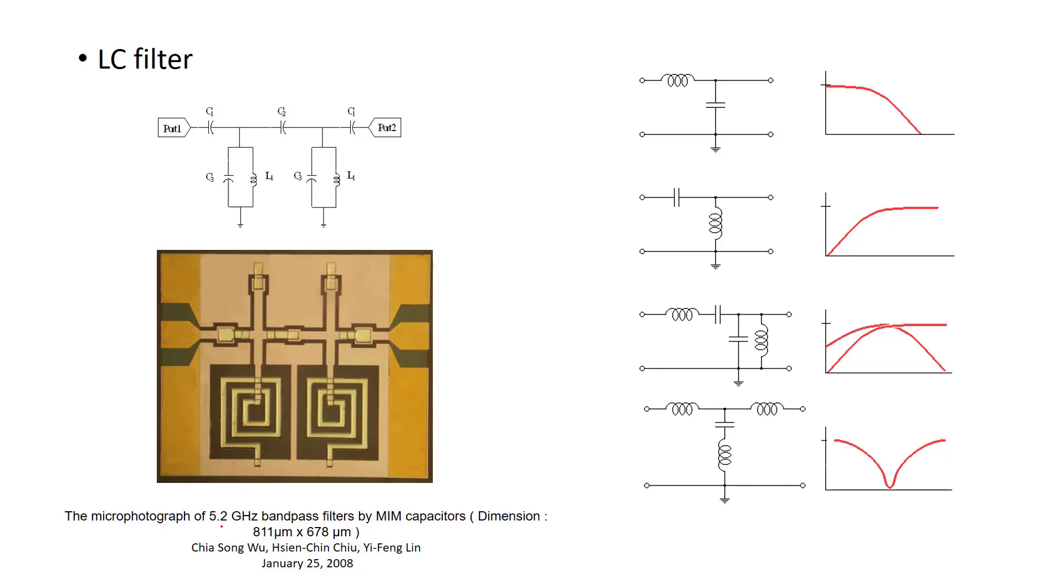This is an example of on-chip LC filter. It's designed to work for 5.2 gigahertz and it's a bandpass filter. As you see, the size is really small comparing to the off-chip LC filter, which are really big and have high area comparing to this one.